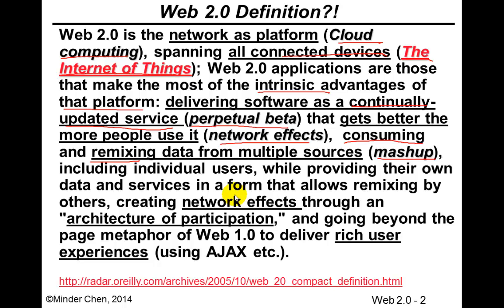Users voluntarily generate a lot of data or information, which can be used by others in the remixing process. The most significant feature of Web 2.0 is that through the network effect, Web 2.0 creates an architecture of participation — which means allowing everybody to be a creator, to share information with others, and to express their opinions and feelings.